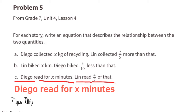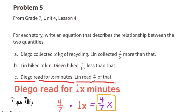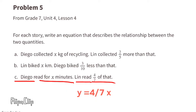Story C: Diego read for x minutes; Lynn read four-sevenths of that. This is not more or less than — it says 'of,' meaning we multiply. Four-sevenths of one x equals four-sevenths x. The equation for this story is y equals four-sevenths x, where y represents the number of minutes Lynn read and x represents the number of minutes Diego read.